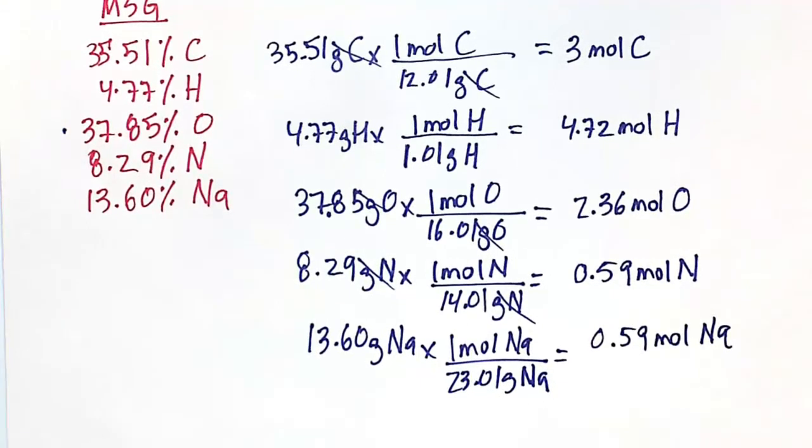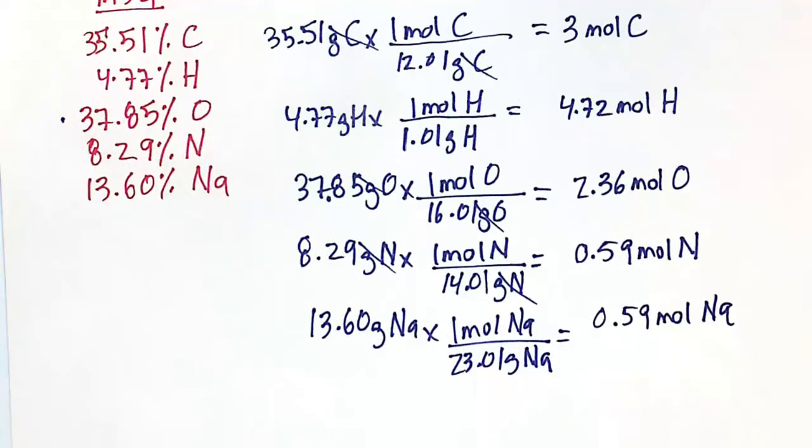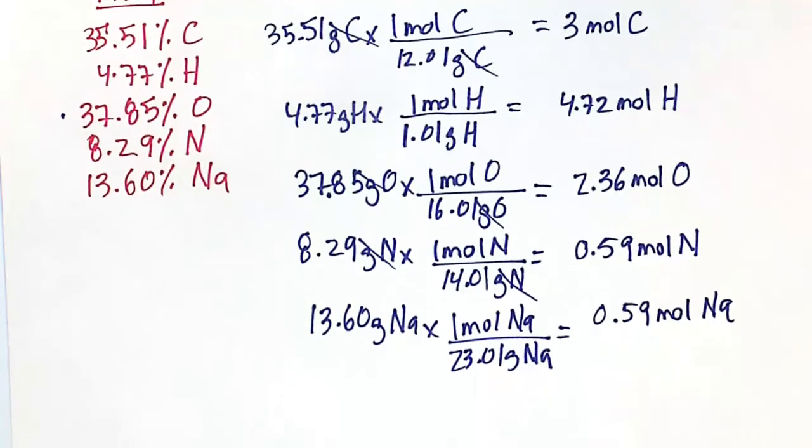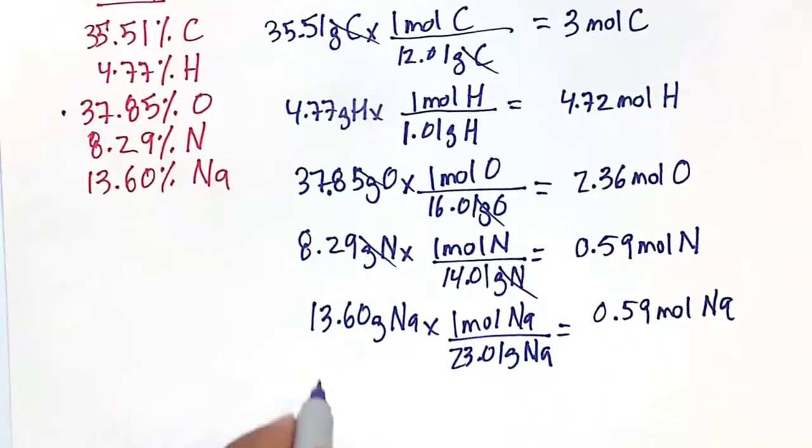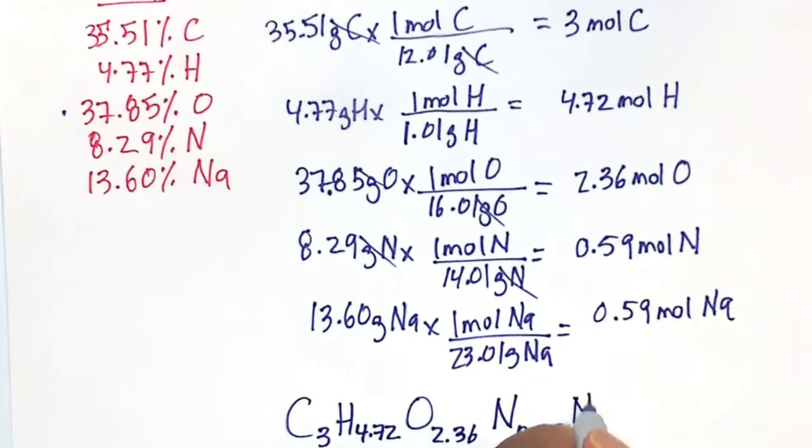Alright, so we got the moles, let's go ahead and fill out our formula, realizing we can never have decimals in our final chemical formula. So, we are having C3, H4.72, that's not good, O2.36, and none of these decimals are good, essentially. N0.59, and then Na0.59.